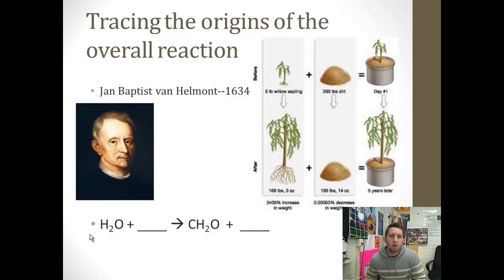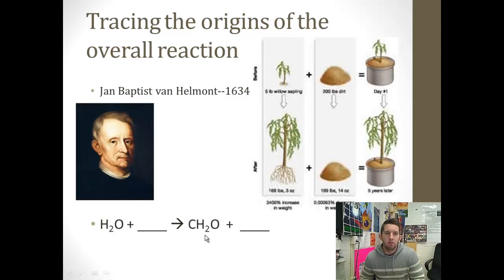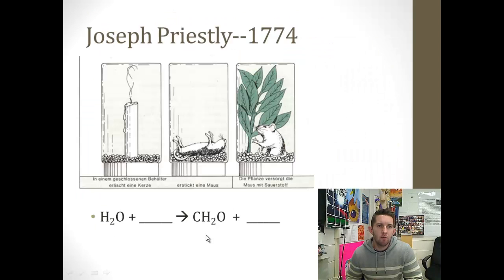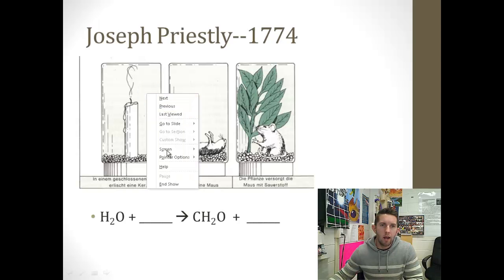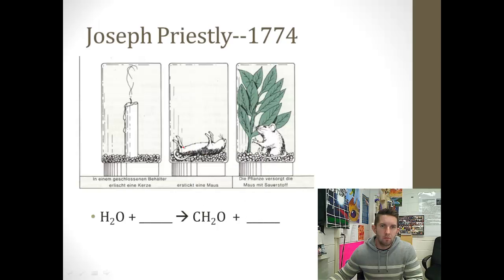Moving forward past Van Helmont — we have water and this generic carbohydrate being produced. Let's go to Priestley, 1774. He did an experiment: a candle cannot stay lit in a closed container, nor can a mouse stay alive in a closed container. If you put a mouse in a jar and close it, the mouse suffocates. But Priestley found that if you put a plant in with a mouse, the mouse doesn't expire — it stays alive. So the plant must produce some kind of life-supporting gas, which we know is oxygen.